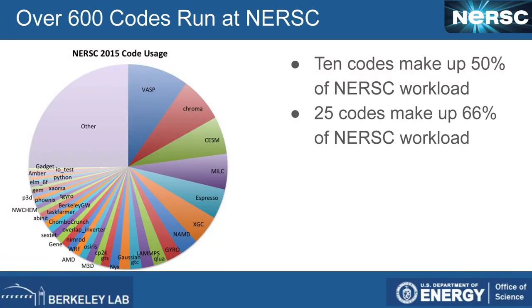We have over 600 codes running at NERSC. While 600 sounds overwhelming, about 10 codes make up close to 50% of our workload, and 25 codes total make up about two-thirds of our workload. Then there's just a bunch of other ones that people are running.